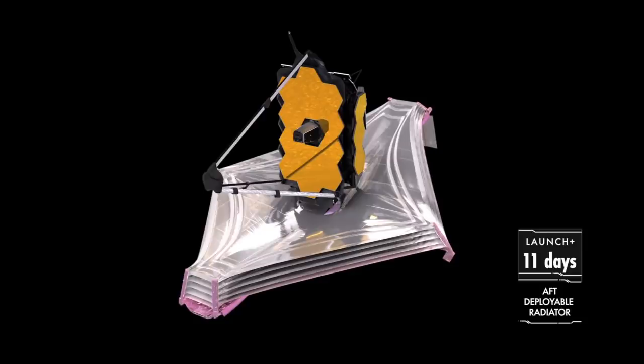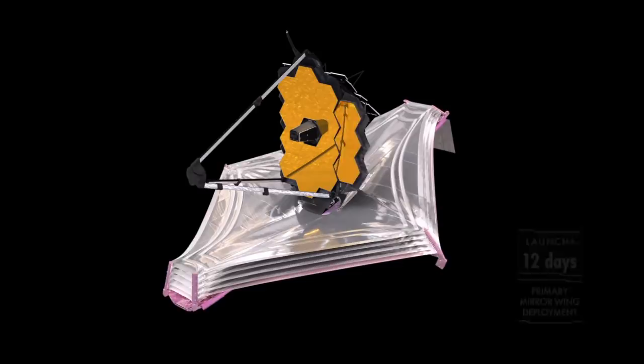This created a situation where the telescope had hundreds of potential failure points and a whole lot of moving parts. But NASA and its contractors are used to this, and often deal with high numbers of potential failure points, but not often as many as JWST had, and there wasn't a single failure in the launch and deployment of the telescope.